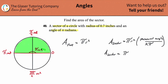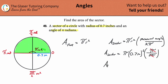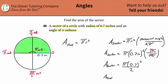Now we just plug in the values. Pi r squared — the radius is 0.7 inches, so we plug in 0.7 squared. Then multiply by the measured angle, which is pi, and divide by two pi. The pi's cancel, leaving pi times 0.7 squared times one-half — the same as just dividing by two, which confirms our earlier intuition. Using the calculator: pi times 0.7 squared divided by 2.